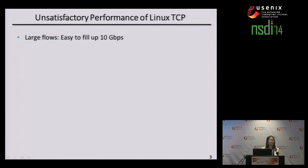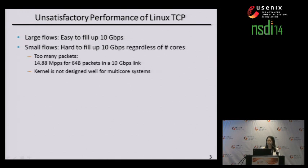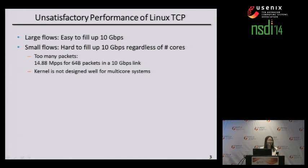Let's think about it in terms of TCP performance problem. For larger flows, it is easy to fill up a 10G pipe even with one flow. But in the case of small flows, no matter how many cores you have, it is very challenging to fill up the 10G pipe. To fill up the link with small flows, you need to process a large number of packets per unit time. For example, you have to process almost 15 million packets per second in the case of 64-byte packets. Secondly, the existing kernel is not designed for multi-core systems, which we'll talk about in detail later.